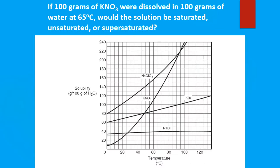We're given 100 grams of potassium nitrate dissolved in 100 grams of water at 65 degrees Celsius, and asked to determine whether the solution is saturated, supersaturated, or unsaturated. We use our solubility curve graph. Starting at 65 degrees Celsius and going to 100 on the graph, we find we need to add more solute to reach the potassium nitrate curve. So this solution is unsaturated — we can still add more solute to reach that point.